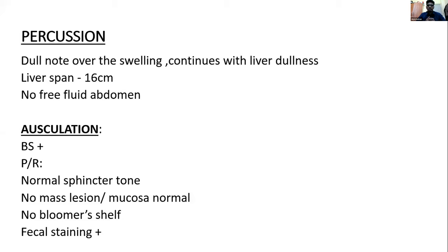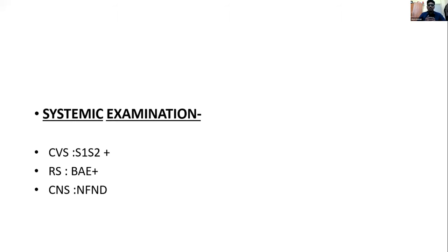On auscultation, bowel sounds present. Digital rectal examination: normal sphincter tone, no mass lesion, mucosa normal, no Blumer's shelf, fecal staining present. Other system examination — CVS: S1 S2 heard, no abnormal heart sounds. RS: bilateral air entry present. CNS: no focal neurological deficits.